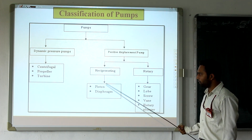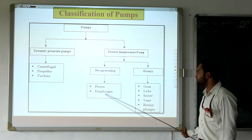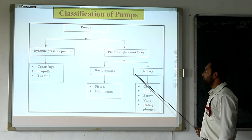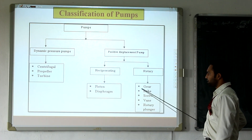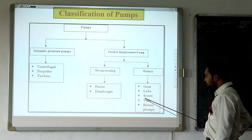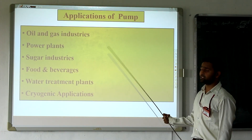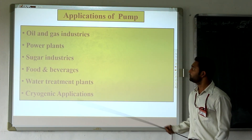In case of reciprocating pumps, piston and diaphragm pumps are there. In case of rotary pumps, gear, lobe, screw, vane, and rotary plunger pumps are included. So this is the classification of pumps.